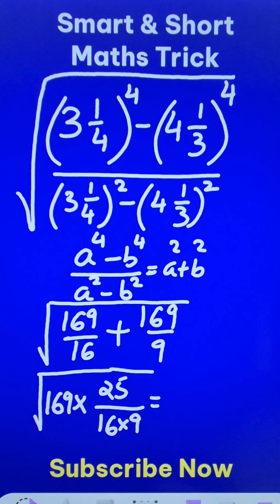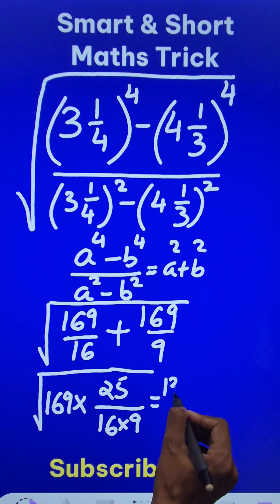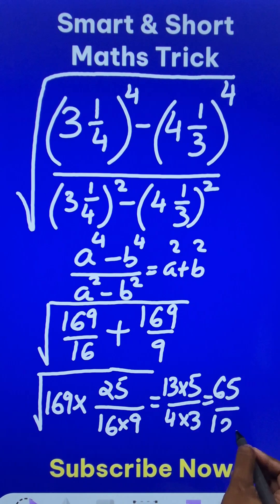Now, if you simplify this, you will have your answer. All these are perfect squares. So, 13 times 5 upon 4 times 3, and your answer for the question is 65 upon 12.